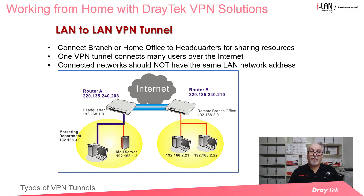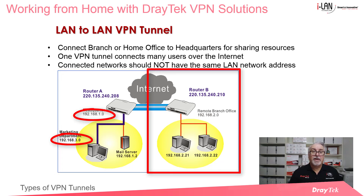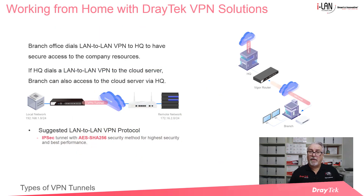One requirement to be aware of is that the two networks should not have the same subnet, as shown in the example here. Router A, the headquarters on the left, is configured as the VPN server and has LAN IP subnets of 192.168.1.0 and 192.168.3.0, while Router B, the remote branch office, is configured as the VPN client with LAN IP subnet 192.168.2.0, which is different from the Router A subnets. Once connected, you can also access anything the head office network is connected to, such as a cloud server.